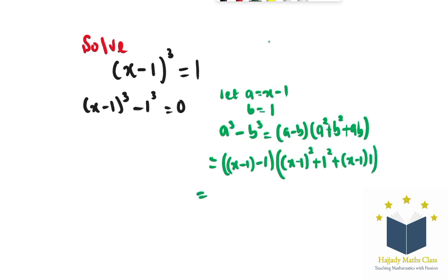Let's multiply this out. I'm going to have x minus 2 times x squared minus 2x plus 1 plus x minus 1 plus 1. So this is going to give me x minus 2 times x squared minus x plus 1. Expanding this we have x minus 2 times x squared minus x plus 1.